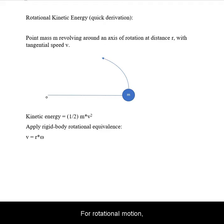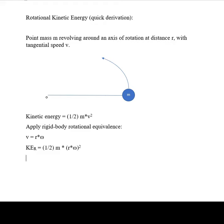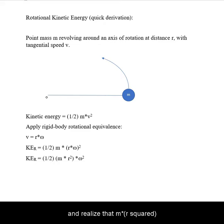For rotational motion, apply the translation through the radius to angular velocity. Substitute in, collect the terms, and realize that mr squared is the moment of inertia for the point mass.